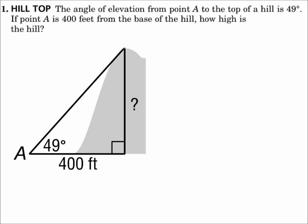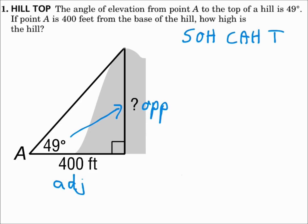Consider the right triangle. The angle of elevation is going to be the angle at the bottom. 400 feet is horizontal, because it goes from that point to the base of the hill. How high is the hill? Height is vertical, so that'll be the vertical side. Identify your sides — opposite, adjacent, and hypotenuse. The side across from my acute angle is opposite. The leg next to it is adjacent. Will I use sine, cosine, or tangent? Using SOHCAHTOA — if I'm dealing with opposite and adjacent, that's going to be tangent.